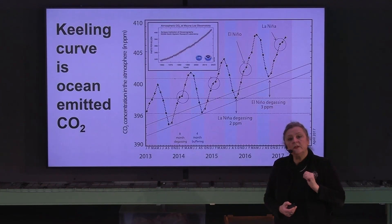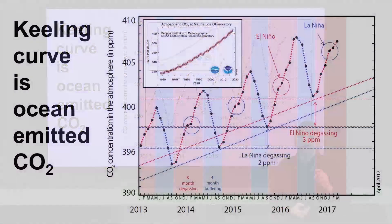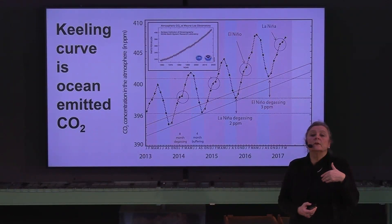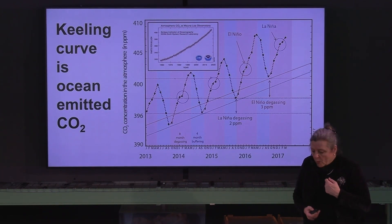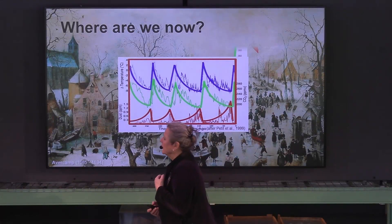This happens each year. We have been seeing this for the past 60 years: eight months of CO2 emission, four months of CO2 uptake; seven parts per million emission, five parts per million uptake. For the past 60 years, that totals 120 parts per million — the amount of CO2 that we thought had been produced by industry. But as I just showed, it is coming from the oceans.